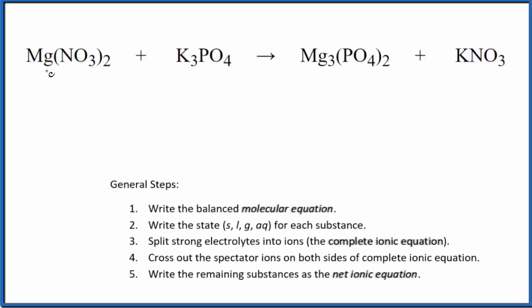Let's balance the net ionic equation for Mg(NO3)2 plus K3PO4. We've got magnesium nitrate and potassium phosphate.